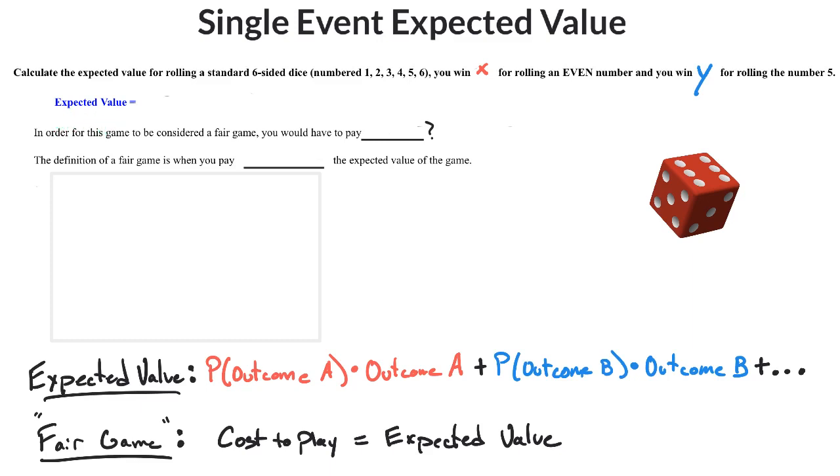What I like to do is make a table. When I make a table, it looks something like this, where the first column is just the outcome column—what are you actually getting? Then you have the probability of that outcome, and then the expected value piece is where you multiply those, and then you're going to add up all those values.